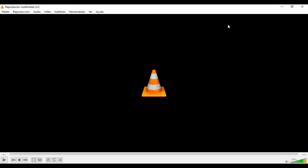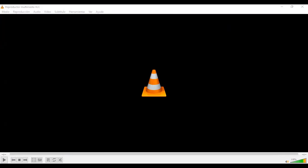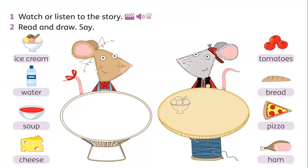Espero que hayan puesto atención a este video porque vamos a realizar una actividad en base a él. In page number 37 of your book, aparece la imagen que estoy proyectando ahora. Dice read, draw, and say. Tenemos que unir cuáles son las comidas que ofrecía Molly, y dibujar en el espacio las cuatro comidas que ofrecía Marcus. Ustedes van a dibujar los alimentos en su libro.